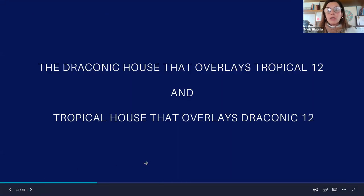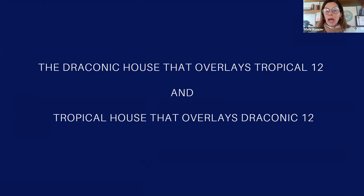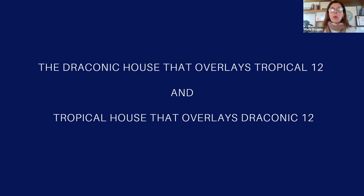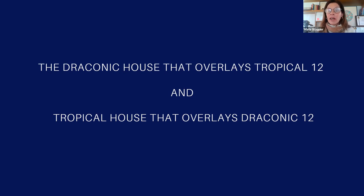When we look at the tropical 12th house in comparison with the draconic layer, this is very important because the 12th house is a house of sorrow. It's a house where we have problems, very complicated issues. Wherever we have this combination of the tropical and the draconic, or vice versa, that is an area of our lives where there will be suffering.